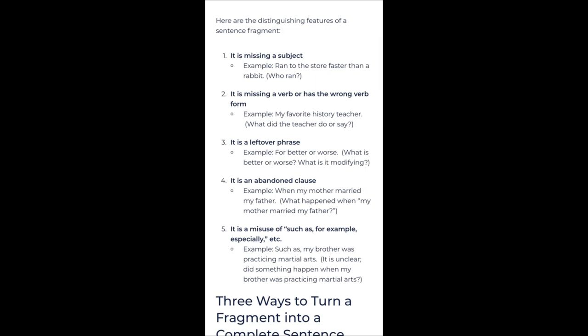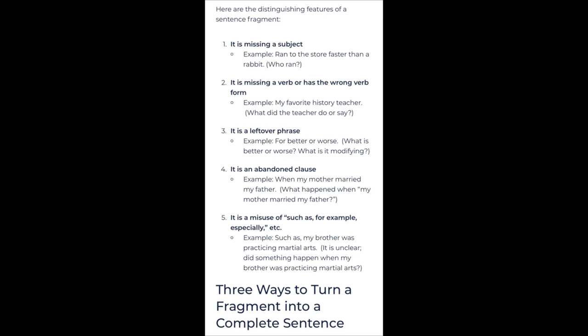A sentence fragment also misses a verb or has the wrong verb form. A verb is something you can do, such as an action. Example: my favorite history teacher. What did the teacher do or say? It is a leftover phrase — for example, for better or worse. You have to clarify what better or worse is.